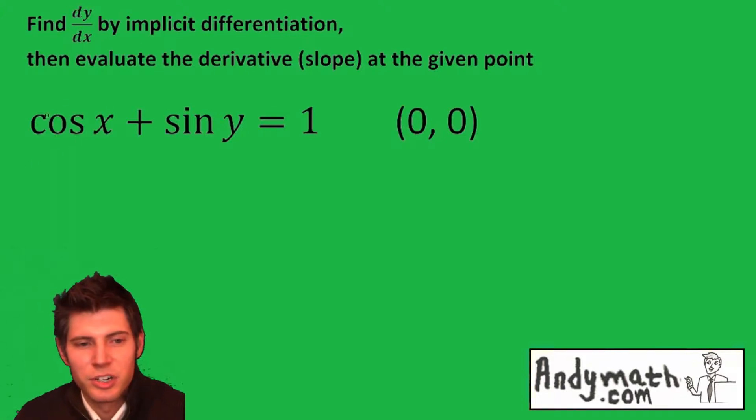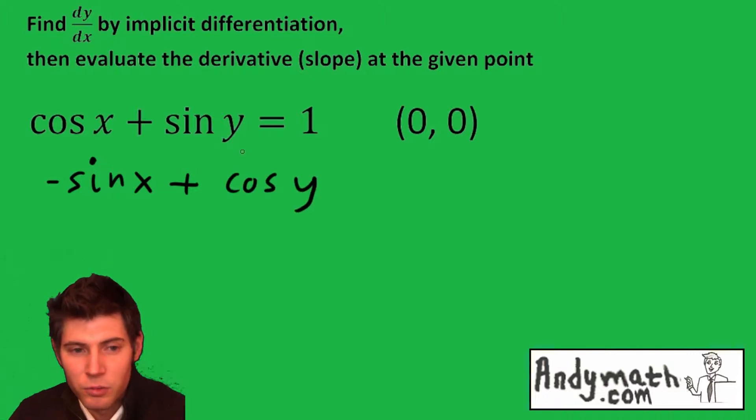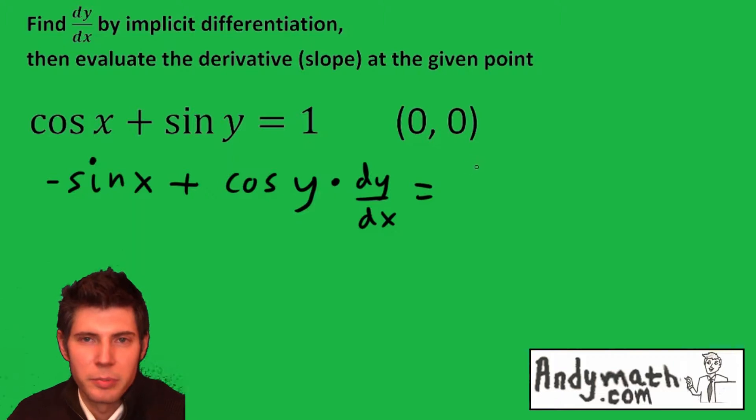So implicit differentiation, what is the derivative of cosine x? The dy/dx of cosine x is negative sine x plus, and the derivative of this is cosine y, and then we have chain rule, because the y is in an x, times dy/dx equals, and the derivative of 1 with respect to x is 0.